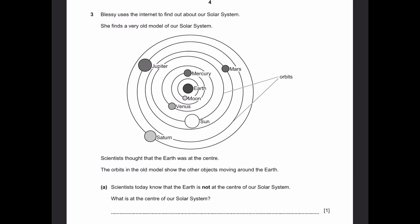Question three. Blessie uses the internet to find out about our solar system. She finds a very old model for the solar system. So we have this old model here, which I think few of you might have already encountered in some science book or anything. Now scientists thought that the earth was at the center. This was like in very olden times, maybe in the BC years, and that was about 2000 years ago. So in the olden times, they thought all of this. The orbits in the old model showed other objects moving around the earth, which we know it's not true today except for the moon. All these planets and the sun, they don't move around the earth. They move around the sun.